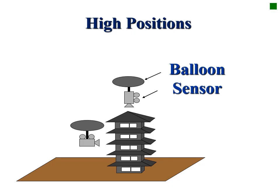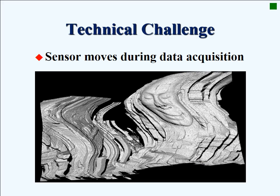The first challenge was to obtain views from high positions. For this, we developed a balloon sensor, which suspends a range sensor under a balloon. Certainly, we can bring a sensor to high positions. On the other hand, the obtained results are twisted due to wind. How to rectify this distorted data is one of the research issues.